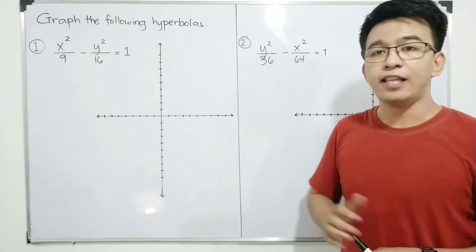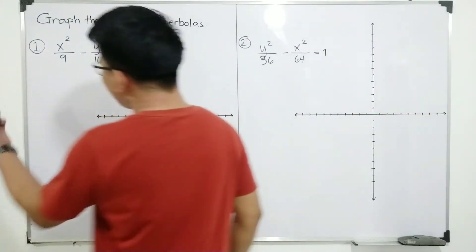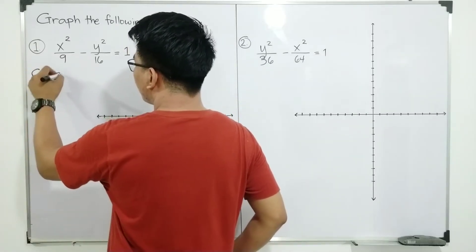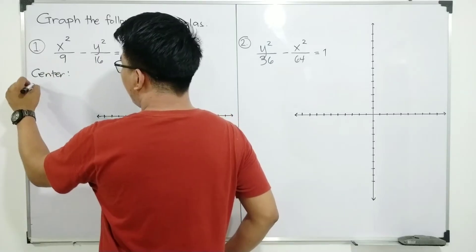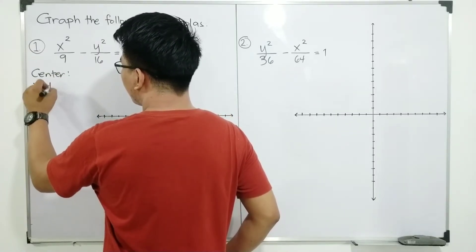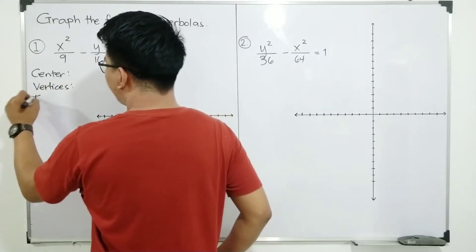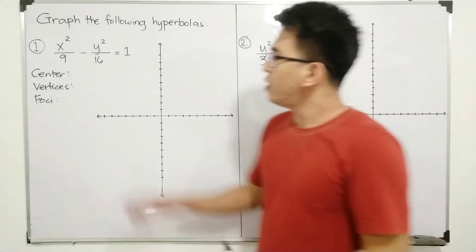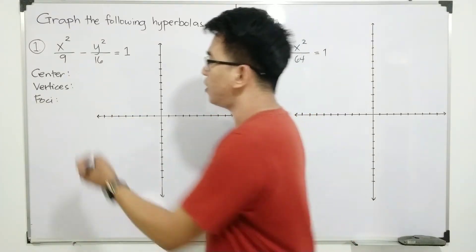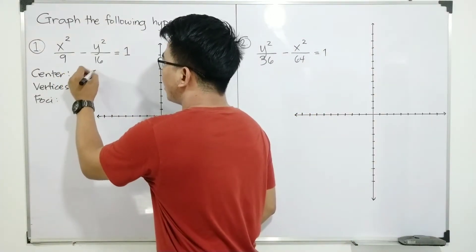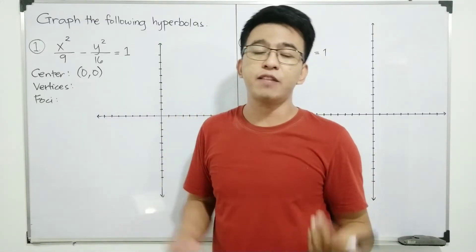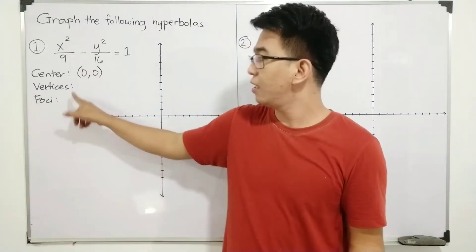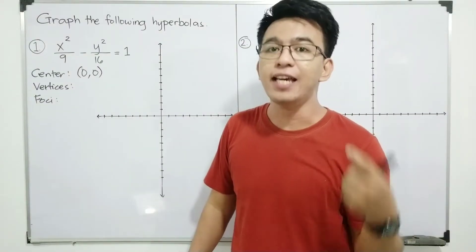The center is at (0, 0). Now, let's start with item number 1. To graph a hyperbola, what we need is to get the center, the vertices, the foci, and the equation of our asymptotes. We need to get the values of a, b, and c.